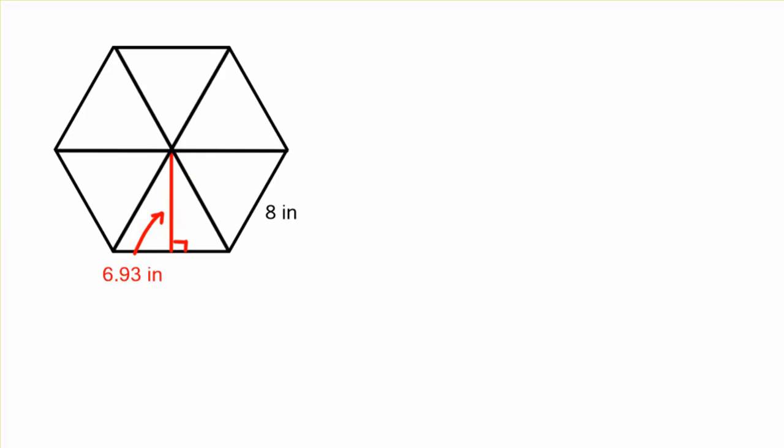Remember that the apothem is just the height of one of those triangles. Those are all going to be congruent in a regular polygon. The base of each of those triangles is going to be 8 inches. So we could just plug that into a formula that looks like this. Area is going to equal one-half base times height for a triangle.